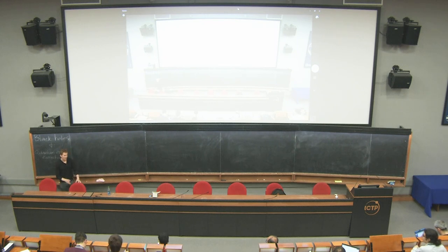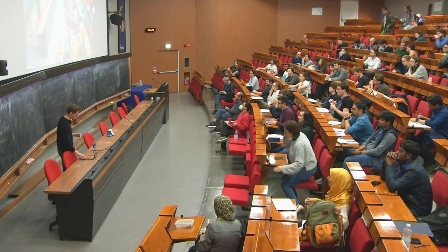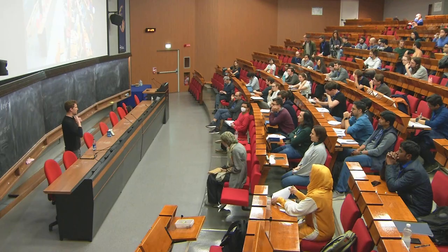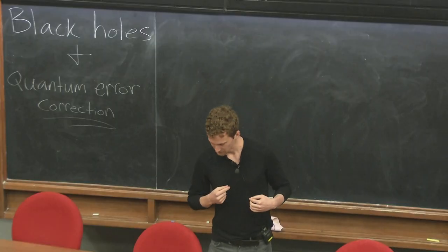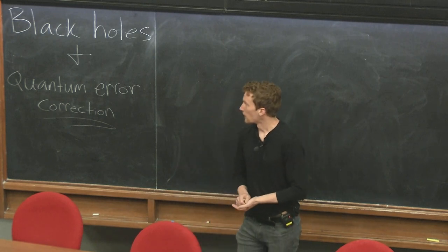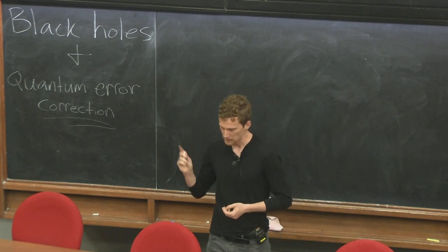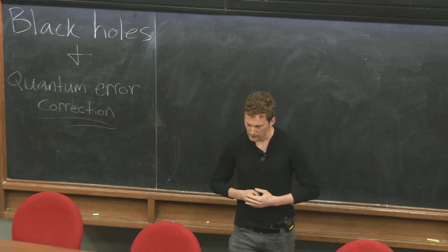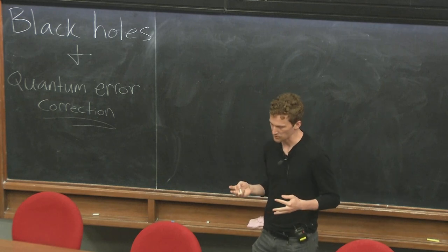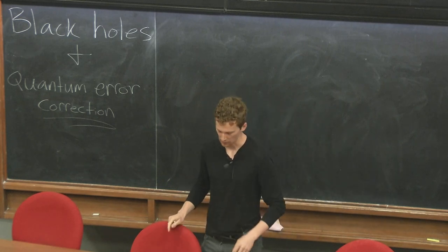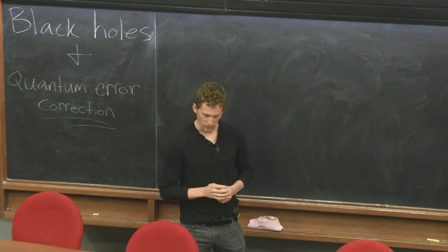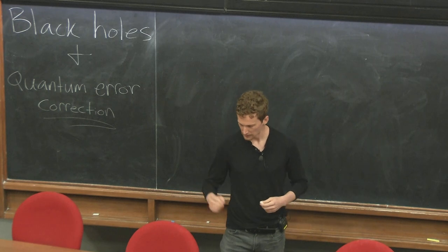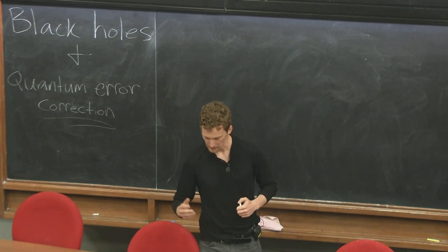Thank you to the organizers for putting this together — I'm having a lot of fun learning from the other lectures. My starting place for thinking about this topic is that I have many questions about quantum gravity that I would like to see answered. Some of these questions are: what happens near singularities in black holes, do generic-state black holes have firewalls, and how is space-time emergent in quantum gravity?